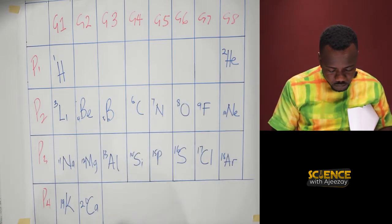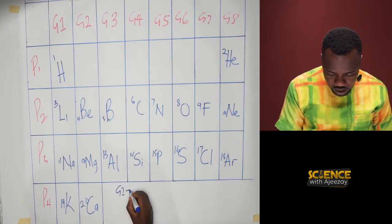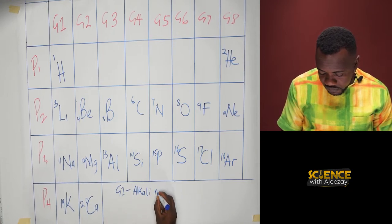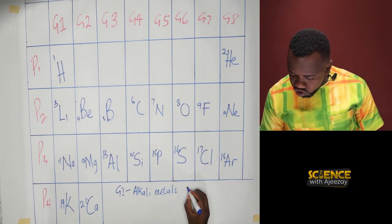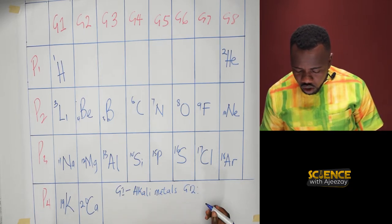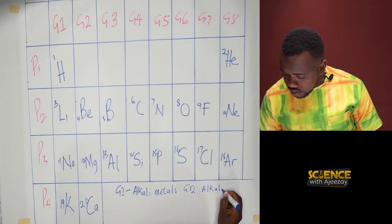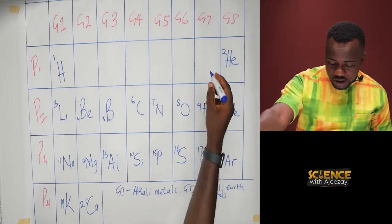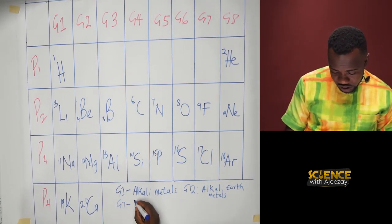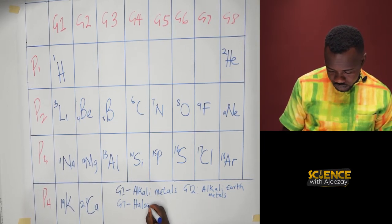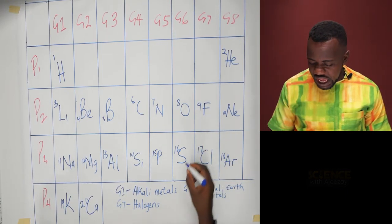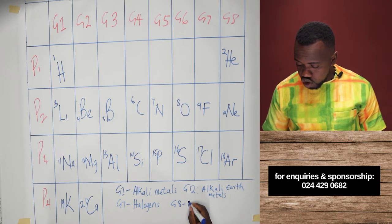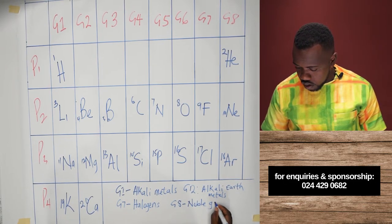When we take group 1, group 1 elements are called alkali metals. Group 2 are called alkaline earth metals. Group 7 are called halogens. And then group 8, also sometimes called group 0, are called noble gases.